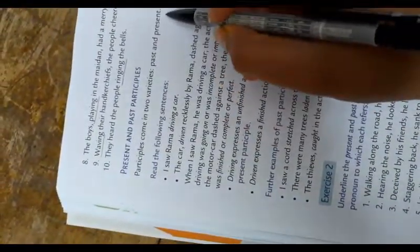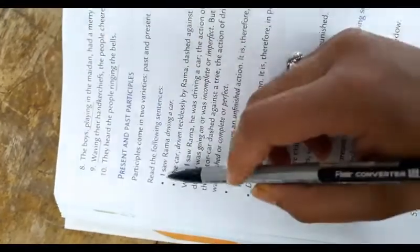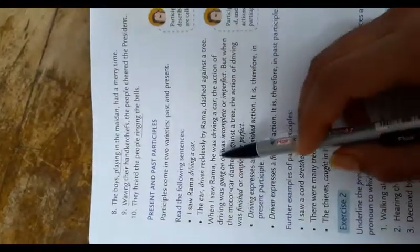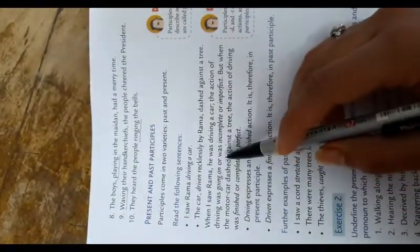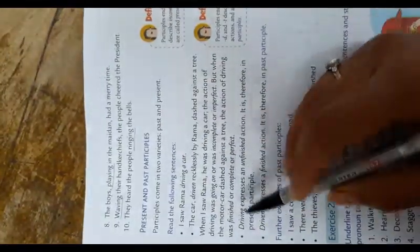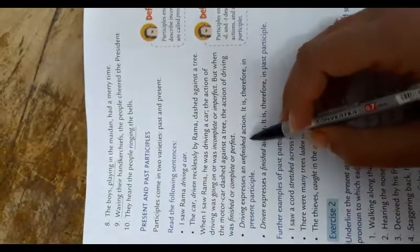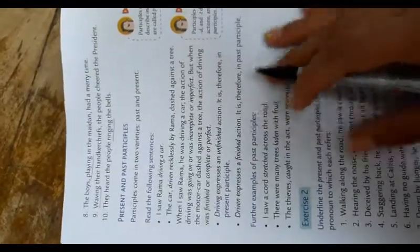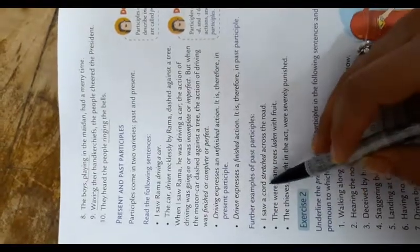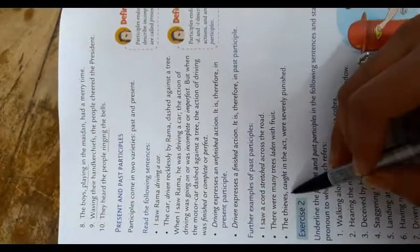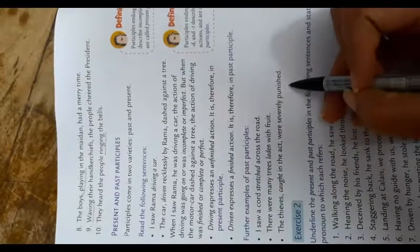Present and past participles: Participles come in two varieties — present and past. Read the following sentences: 'I saw Rama driving a car.' 'The car driven recklessly by Rama dashed against a tree.' When I saw Rama, he was driving a car — the action of driving was going on, incomplete or imperfect. But when the motor car dashed against the tree, the action was finished or completed. 'Driving' expresses an unfinished action — it is therefore a present participle. 'Driven' expresses a finished action — it is therefore a past participle. Further examples: 'I saw a car stretched across the road.' 'There were many trees laden with fruit.' 'The thieves caught in the act were surely punished.'